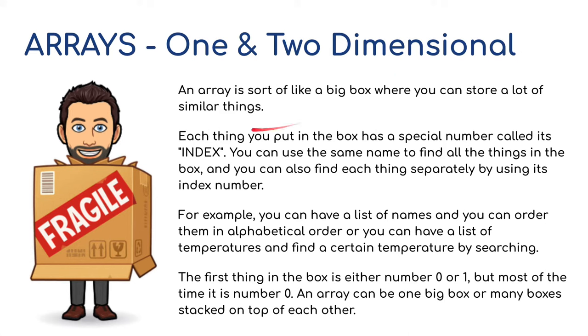An array is sort of like a big box where you can store a lot of similar things. Each thing you put in the box has a special number called its index. You can use the same name to find all the things in the box and you can also find each thing separately by using its index number. The first thing in the box is either number 0 or number 1, but most of the time it would be number 0, especially if you're using Python. An array can be one big box or many boxes stacked on top of each other, hence one and two dimensional arrays.